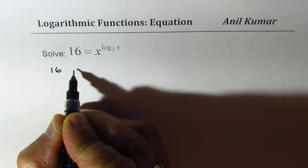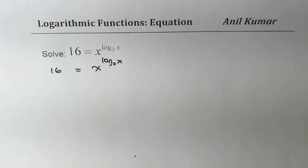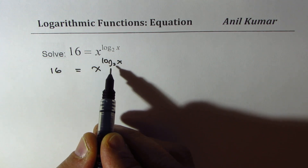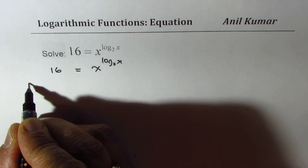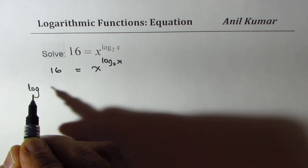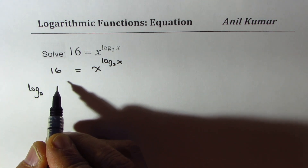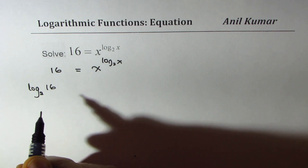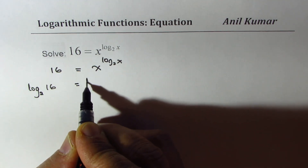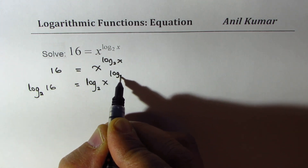We are given 16 is equal to x to the power of log to the base 2 of x. How should we begin? One way is to take log to the base 2 of x on both sides. We actually solve such equations by taking logarithms on both sides. Since we are talking about base 2, it should be log to the base 2 on both sides. So we have log to the base 2 of 16 equals log to the base 2 of x to the power of log to the base 2 of x.